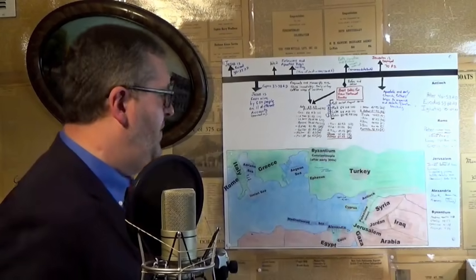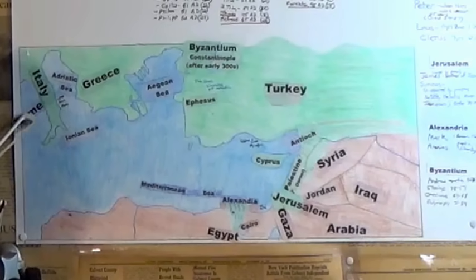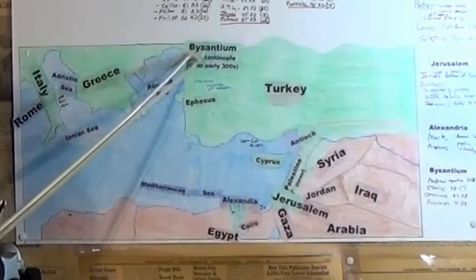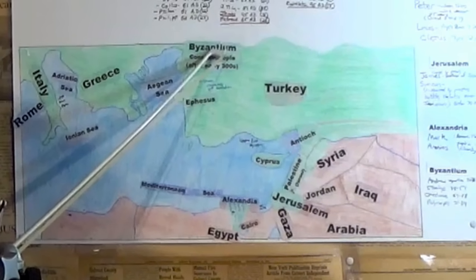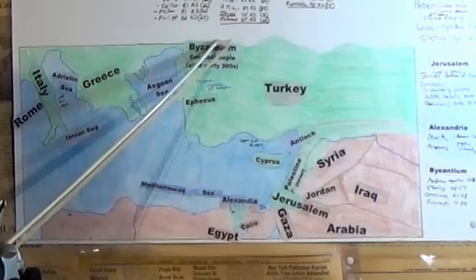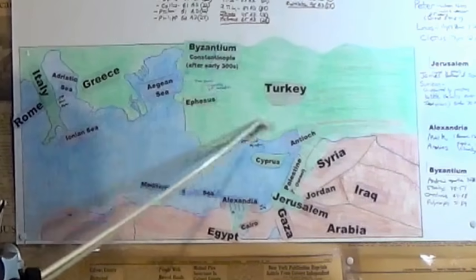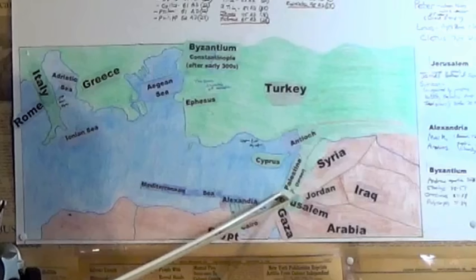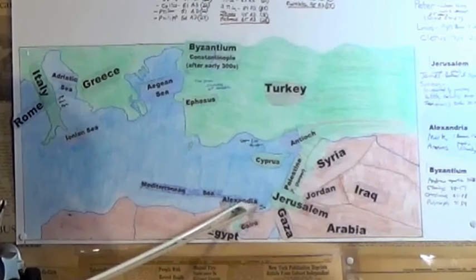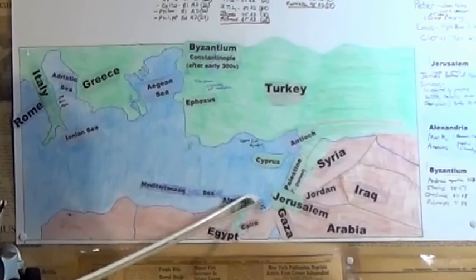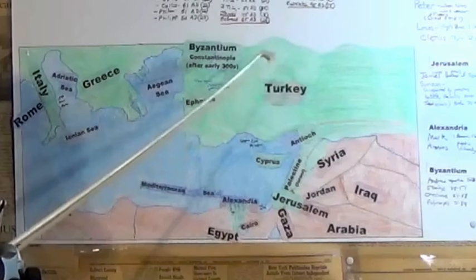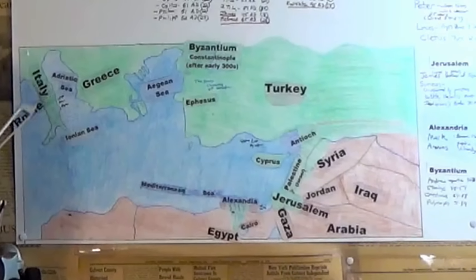This is where it gets really fascinating. Five cities pop up. Rome. Byzantium, which really wouldn't pop up till later. It's called Byzanticon, and it's not really a strong center like the others yet. Antioch, Jerusalem, Alexandria. Let me say them again. Alexandria, Jerusalem, Antioch, Byzantium, and Rome.